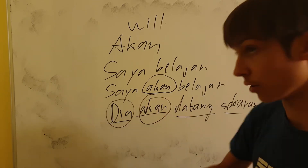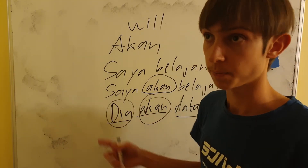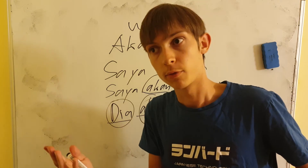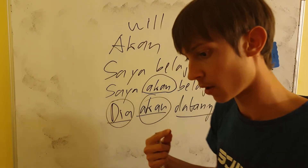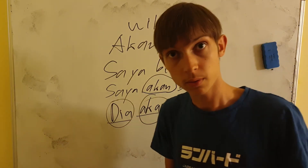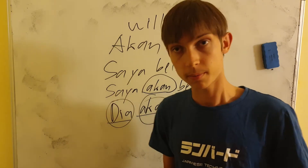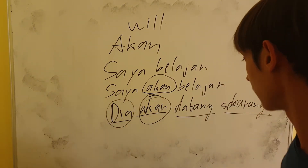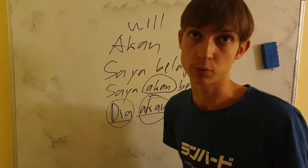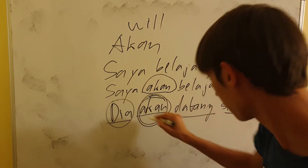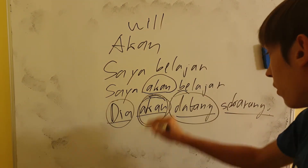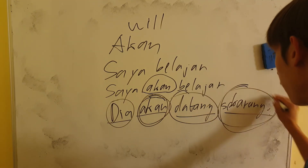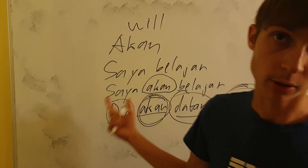'Akan' is the future tense marker, and it even works for the conditional, so it can also mean 'would' — but that's for a different lesson. For the future tense, you just put 'akan' in front of the verb, then the verb you want to use, and then the object or whatever information you want to add.